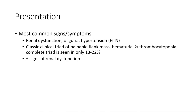The most common signs and symptoms are renal dysfunction, oliguria, hypertension, classic clinical triad of palpable flank mass, hematuria, and thrombocytopenia. The complete triad is seen in only 13 to 22 percent, plus or minus signs of renal dysfunction.